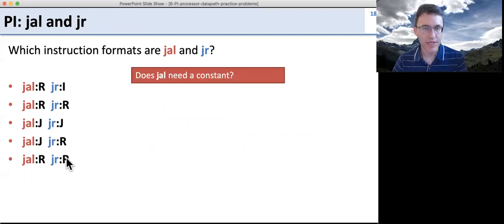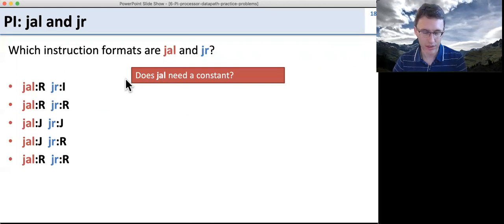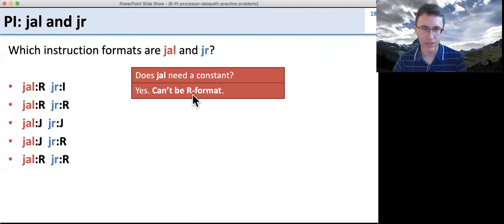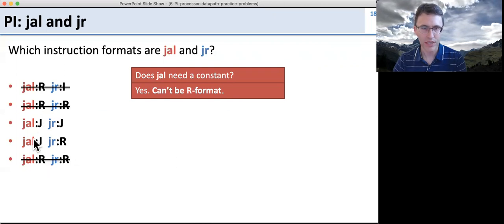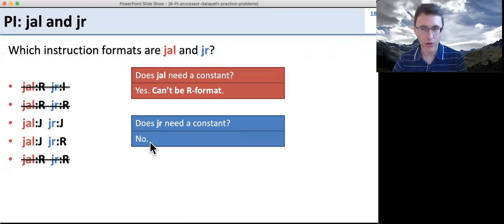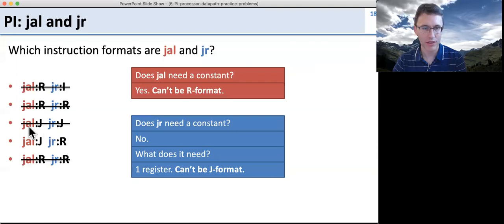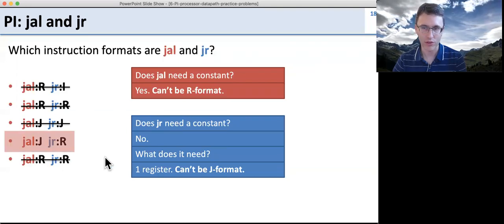Which ones can we eliminate? Does jump and link need a constant? Jump and link goes to an address and stores the next PC so you can come back to it — yes, it does need an address, so it can't be R format. We can cross out all options that had jump and link as R format. Does jump register need a constant? No — jump register just takes a register value and uses it. So it needs a register file, which means it can't be J format since J format doesn't support register files. That means we have the remaining format for those two instructions.